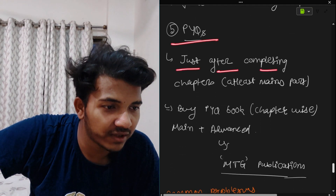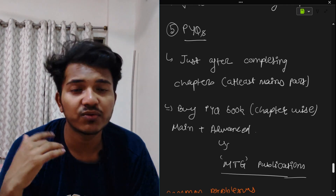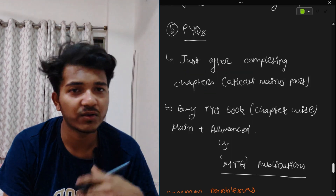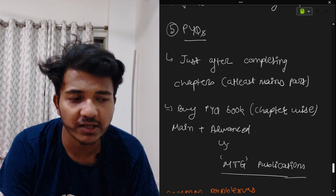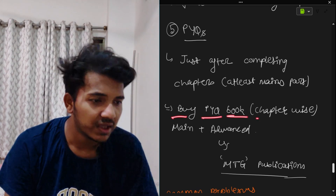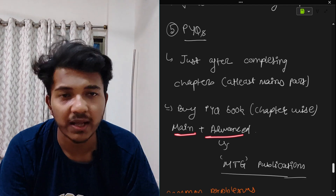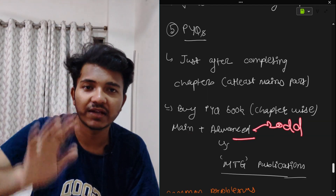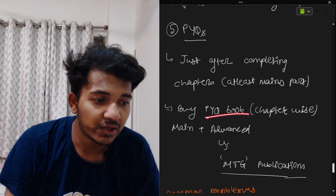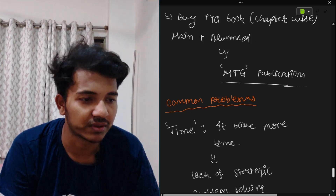Now let's talk about PYQs. Start solving PYQs just after completing chapters, at least for the Main level. Many people ask when to start — the answer is: right after completing a chapter. For example, if you've completed straight lines, start solving PYQs for it. Solve from a chapter-wise PYQ book — both Main plus Advanced. Even if you're only preparing for Main, buy the Main plus Advanced book because old advanced single-choice questions from the 1990s are also useful. I recommend MTG Publications because their solutions are very accurate.